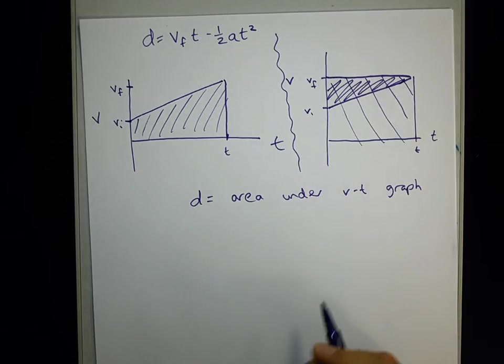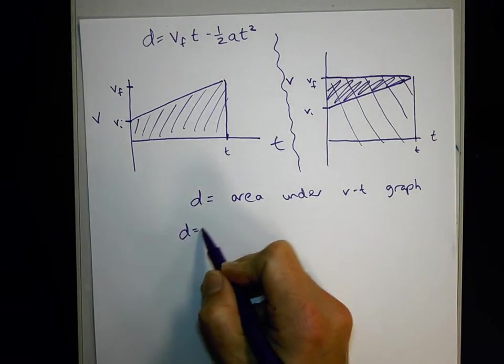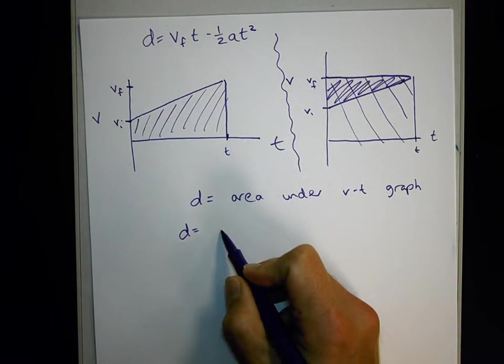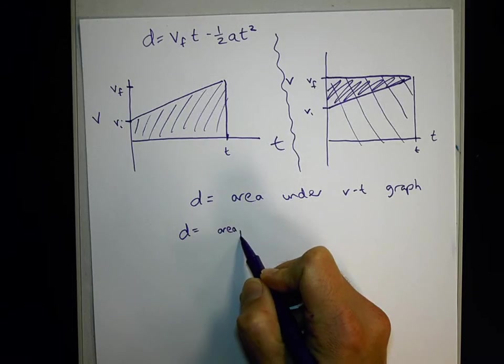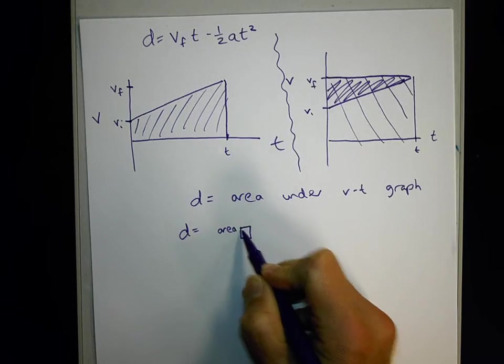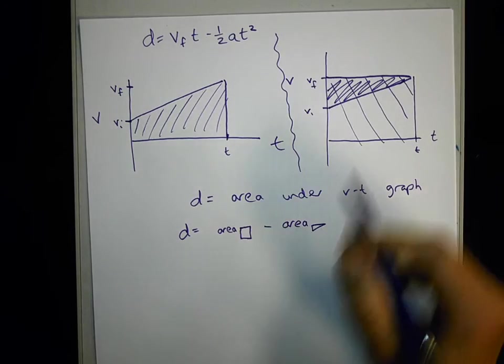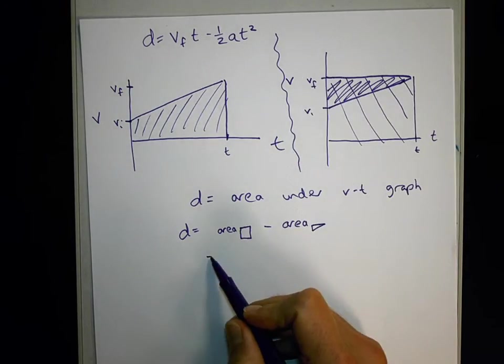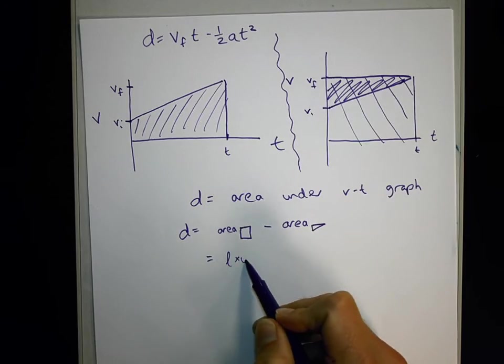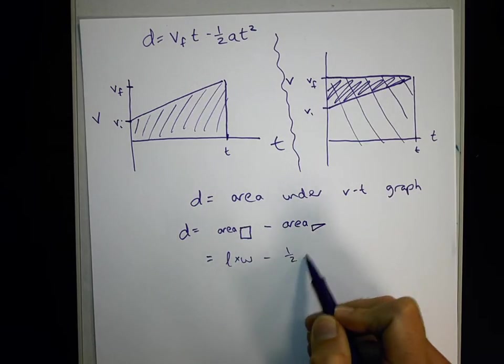So in this version, we say, okay, the area I'm looking for, the area under graph 1, is the same as the area of that really tall rectangle minus the area of that kind of lopsided top triangle. The area of that big rectangle, in general, the area of a rectangle is length times width, and the area of a triangle is a half base height.